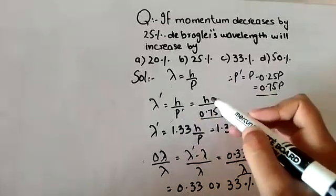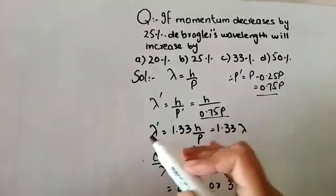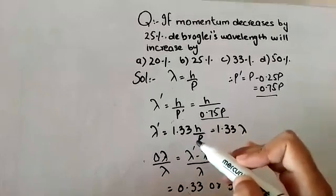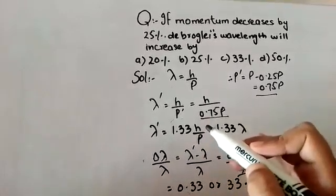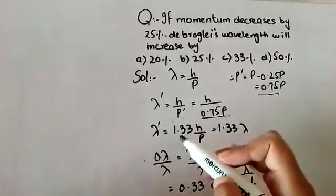This will be h over 0.75p. Lambda dash is equal to 1.33h over p, which simplifies to 1.33 times the original wavelength.